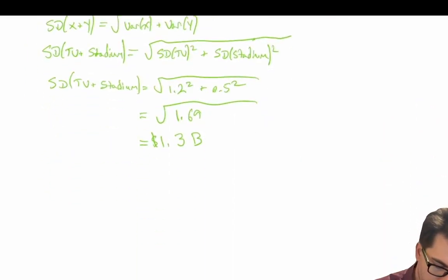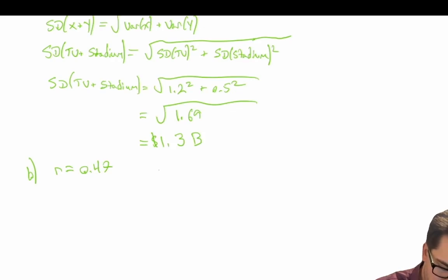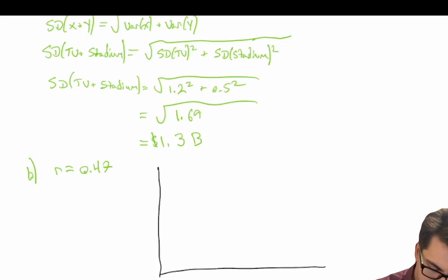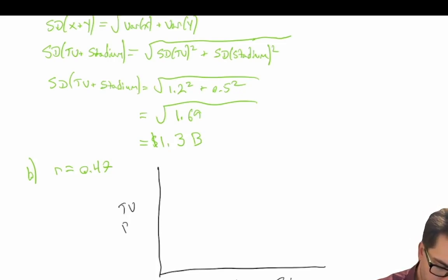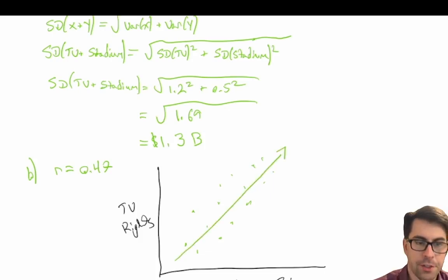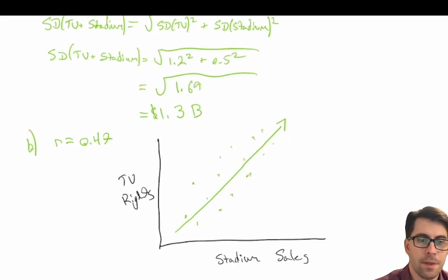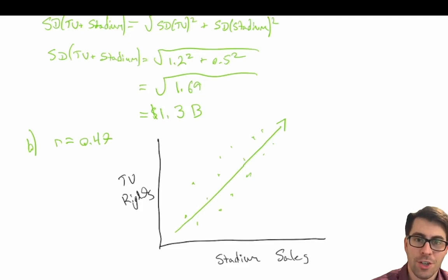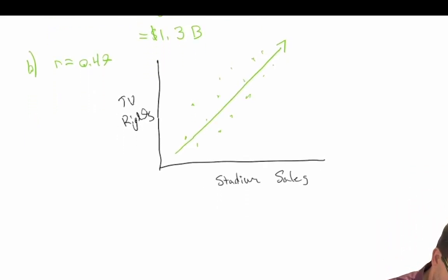We're told we have a correlation coefficient of 0.47. We can draw a scatter plot with Stadium sales on one axis and TV rights on the other. A positive correlation coefficient of 0.47 means there's a positive linear relationship between TV rights and stadium sales. Intuitively this makes sense: the more popular the team, the more people watch on TV, and the more people attend games and spend at the stadium.